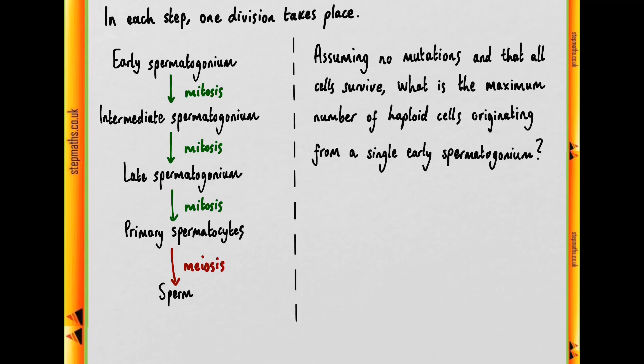The only cell type produced by meiosis is the final sperm cell, produced from the diploid primary spermatocytes. So essentially what we need to work out is, how many sperm do we get from a single early spermatogonium?